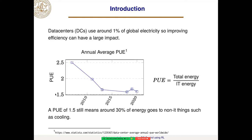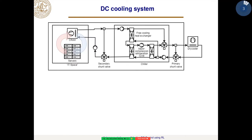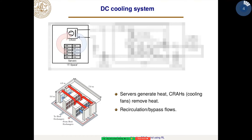There is still a lot of improvement to do, since 1.5 means around 30% of energy goes to non-IT things such as cooling. So we want to look at the cooling system and what we can do there. A data center cooling system consists of the IT space — where we have the servers — and the CRA unit. The servers generate heat that flows to the CRA unit, which cools it down and blows colder air back to the servers. There can be some mixing of the hot and cold air, which creates inefficiencies we want to avoid.